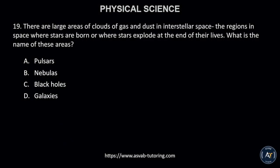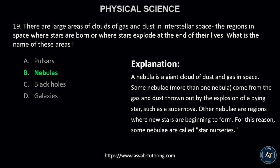Number 19. There are large areas of clouds of gas and dust in interstellar space, the regions in space where stars are born or where stars explode at the end of their lives. What is the name of these areas? A. Pulsars, B. Nebulas, C. Black holes, or D. Galaxies. The correct answer is B. Nebulas.